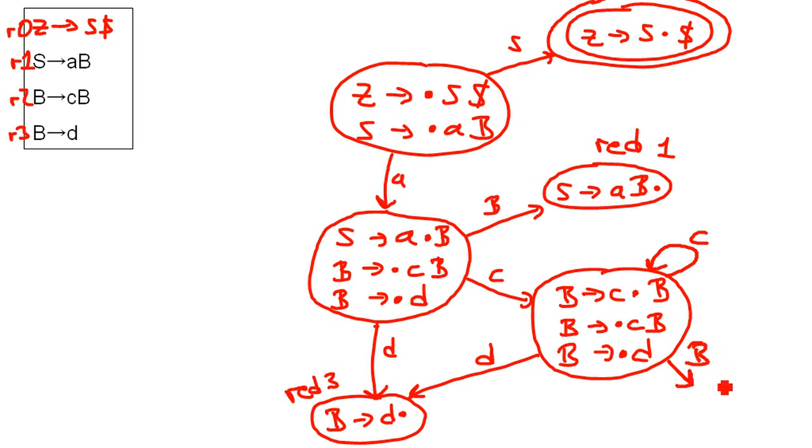Then we end up with this state. And again, the marker is at the end. So we have a reduction. In this case, by rule number two. And that's it. We finished our state machine. Check out the next video for creating the parsing table.